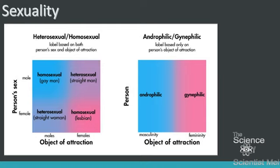Sexuality is not binary, yet there are two categories we can use for educational purposes to describe different types of sexuality: monosexual and plurisexual. Mono is attracted to one gender; pluri is attracted to many genders. You can have multiple genders and multiple sexualities.